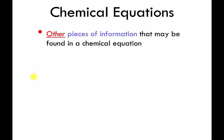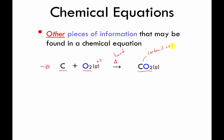Before moving on, let's look at an example equation. This equation says: I took some carbon, mixed it with O2 gas, heated these things up, and it made CO2 — carbon dioxide — which is the stuff we breathe out as waste, and the carbon dioxide was also a gas. Now we have some tools to interpret more complicated chemical equations.